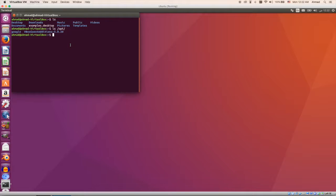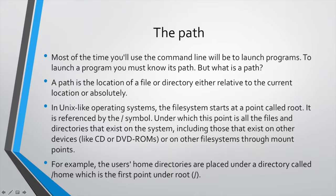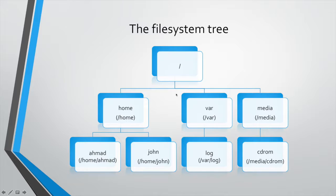In Linux, to execute a command you have to give the system its full path — the location of the program either relative to your current location or relative to root. Consider the file system tree: it is technically called the file system tree. Think of it as an inverted tree — a normal tree has its roots at the bottom, but in the file system the tree is inverted so the root is at the top. The root is denoted by the slash symbol '/'.